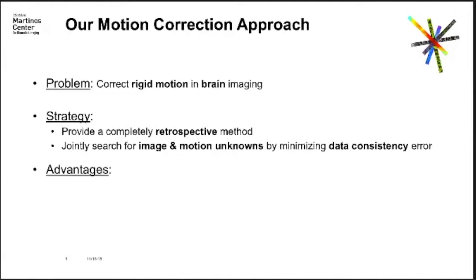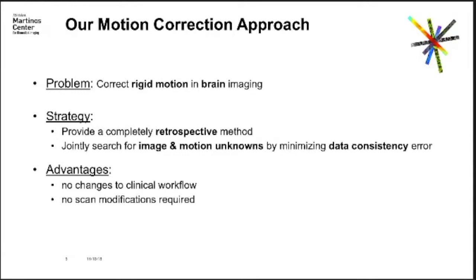We do that by minimizing the data consistency error, which is essentially a quality metric for how well your reconstruction model fits your actual raw data. The advantages of this technique are that there are no changes to the clinical workflow — you don't need to add any markers or change the acquisition. No scan modifications are required. For an acquisition like Turbo Spin Echo T2 imaging, you're acquiring data very fast, so it's hard to add in extra navigators or measurements.